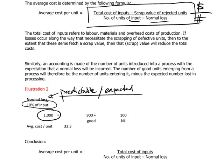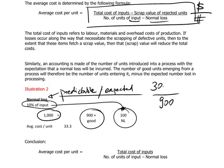If we start a process with 1,000 units and 10% are subject to normal loss, then we can budget for the fact that 100 units will be part of the normal loss and we will end up with 900 units of good output. If we've accumulated $30,000 of production costs, then the cost per unit effectively will be $30,000 divided by 900 units and not 1,000 units. 33.3 will be our adjusted average cost per unit.